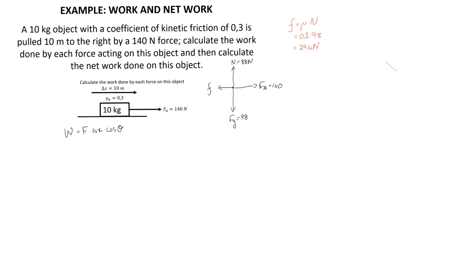Now that we know all the forces acting on the object, we can calculate the work done by each. The work done by the applied force equals the applied force multiplied by the displacement multiplied by the cosine of the angle between them. The applied force is 140 newtons, the displacement is 10 meters, and since motion and displacement are in exactly the same direction, the cosine of 0° equals 1, giving us 1400 joules — positive, meaning energy was added to the object.